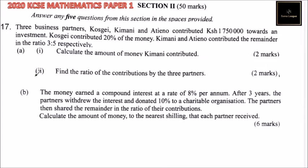Question number 17. We are told three business partners, Kosige, Kemani, and Atieno, contributed 1,750,000 shillings towards an investment. Kosige contributed 20% of the money, and Kemani and Atieno contributed the remainder in the ratio 3 to 5 respectively.